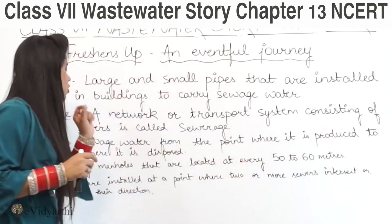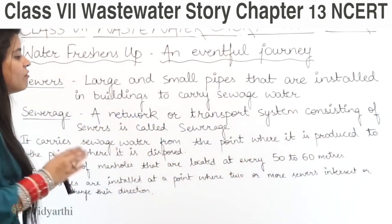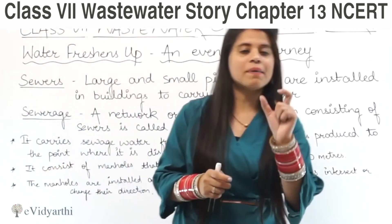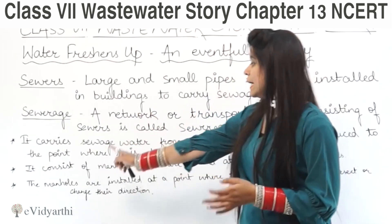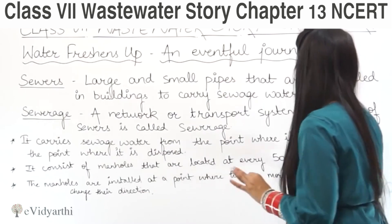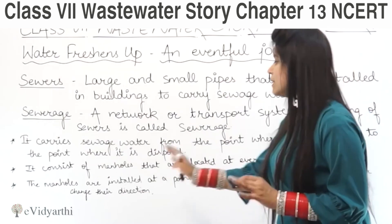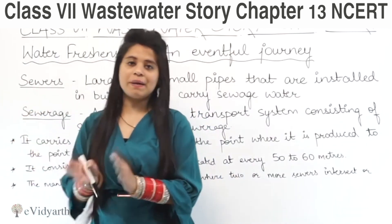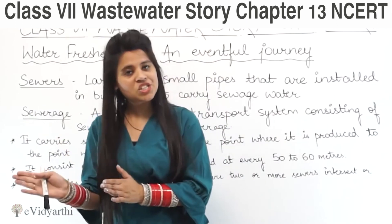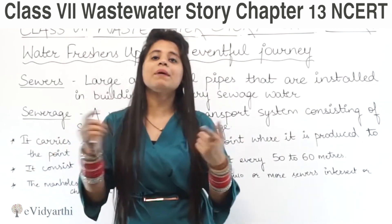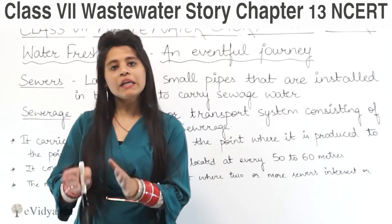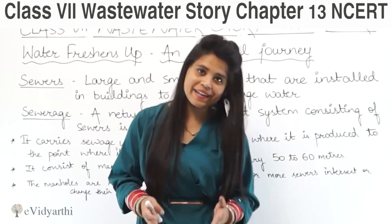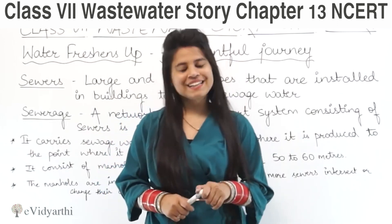The sewerage system consists of manholes located at every 50 to 60 meters. Manholes are installed at points where two or more sewers intersect or change direction. So whenever the pipe needs to change direction, or where two sewers are connected, there will be a manhole. These manholes are basically used to change the direction of the pipe.